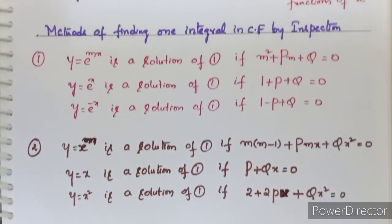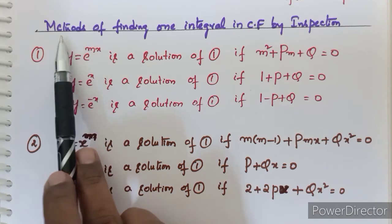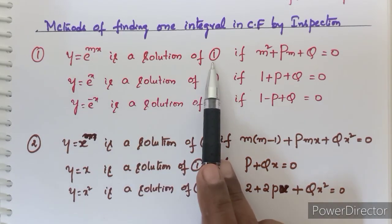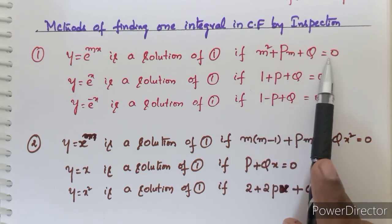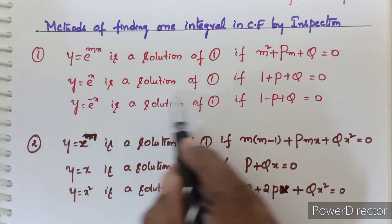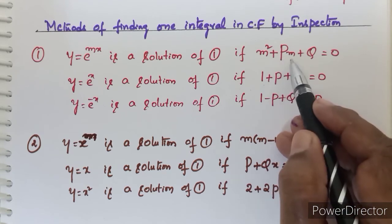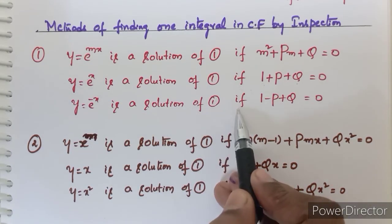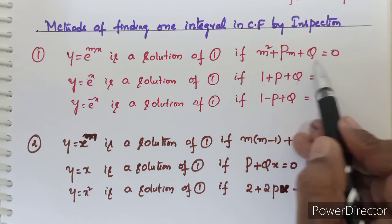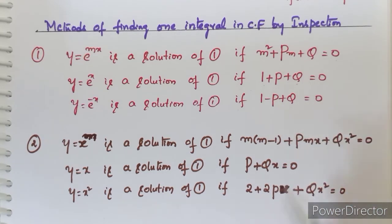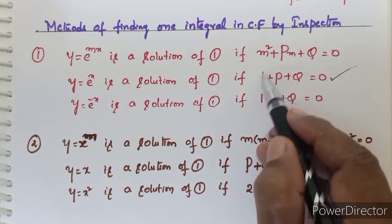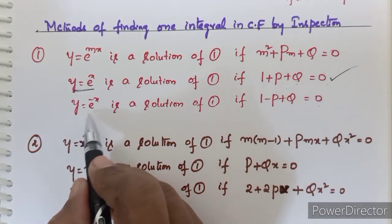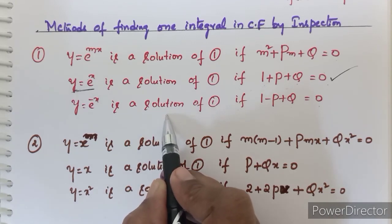There are several methods. Now we discuss the inspection method — methods of finding one integral in the complementary function by inspection. y = e^(mx) is a solution of equation 1 if m² + pm + q = 0. By putting m = 1, y = e^x is a solution if 1 + p + q = 0. By putting m = −1, y = e^(−x) is a solution if 1 − p + q = 0. If 1 + p + q = 0, then y = e^x is part of the complementary function; if 1 − p + q = 0, then y = e^(−x) is part of the complementary function.